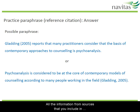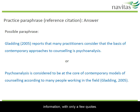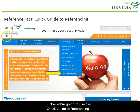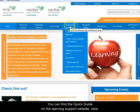All the information from sources that you include in your assignment should be referenced. Most of the time you should be using paraphrases of the information, with only a few quotes. Now we're going to use the Quick Guide to Referencing to learn how to do a reference list. You can find the Quick Guide on the Learning Support website here.